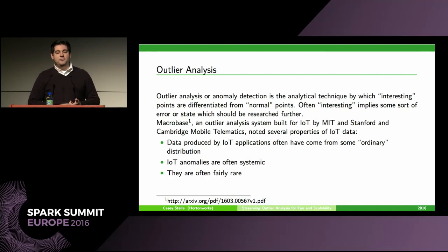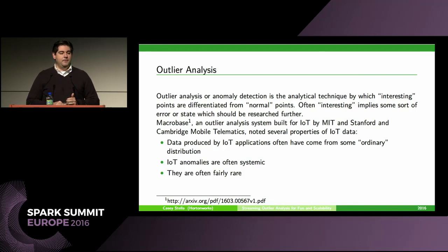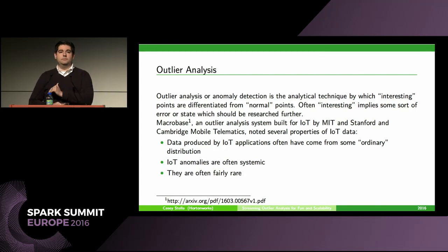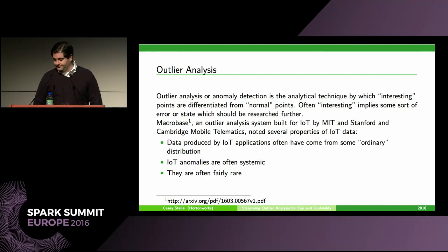They noticed several properties of IoT data: data produced by IoT applications often comes from some ordinary distribution — simple statistics, not super complicated. IoT anomalies are often systemic — one will cause a systemic failure, so you'll see a lot of them suddenly. What you really want is the canary in the coal mine. And finally, they're often fairly rare despite being systemic. Finding a way to reduce false positives is important.